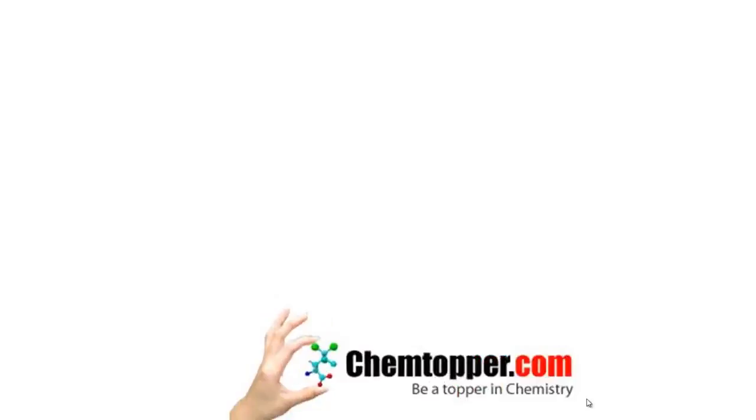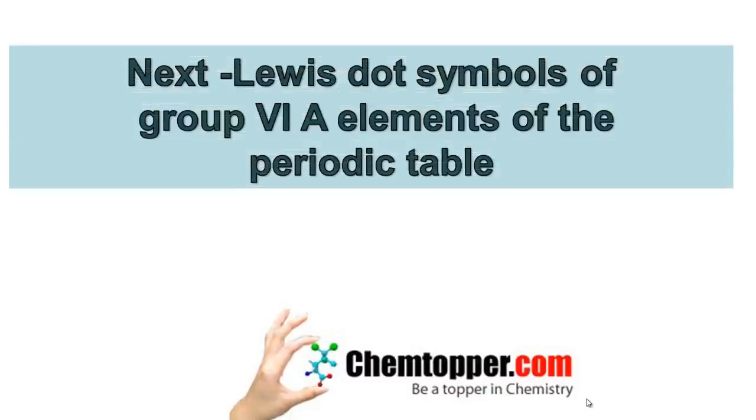In this video, we learned about making Lewis dot symbols of Group 5A elements. In the next video, we are going to learn how to draw Lewis dot symbols of Group 6A elements of the periodic table. If this video has been helpful to you, please click on subscribe and like icon below the video and share it with others on Facebook or Twitter. If you want to learn chemistry online from me or for more chemistry resources, please visit my website www.chemtopper.com.